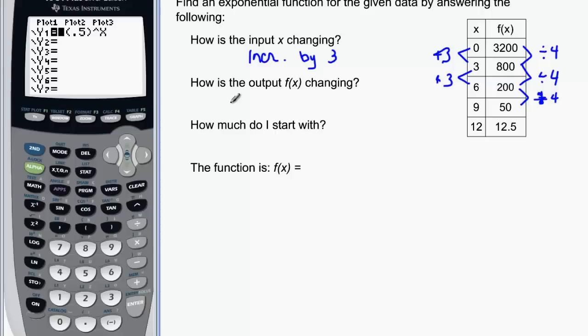We divide by one fourth. We could say that we divide by one fourth or the same thing is also multiplying by one over four. Same thing as dividing by four. Now how much did we start with? Remember x is zero. So when x is zero we say that we started with 3200. So 3200 is our a. One fourth is also our b.